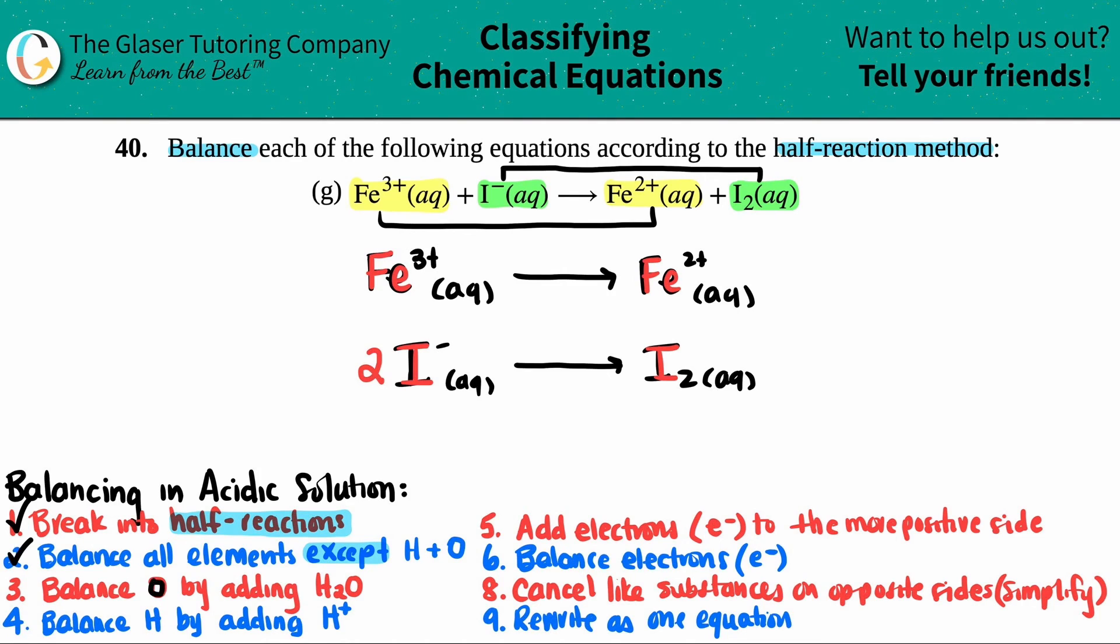Step three is to balance the oxygen. But however, we don't have any oxygen here. So I can skip that step. Step four is to balance any hydrogen. But once again, I don't have any hydrogen. So I just kindly skip over it. And now we come to a step in which we will never, ever, ever skip.